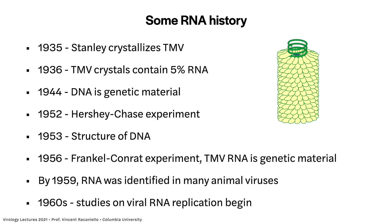In 1935, tobacco mosaic virus — remember the first virus discovered in the end of the 1800s — a scientist named Stanley crystallizes it. The crystals are made of protein and have 5% RNA in them. In 1936, Stanley said it's a contaminant, it's irrelevant. He thought the protein was infectious, which now we know happens for other things called prions. But this was a virus, and the RNA was what conferred infectivity.